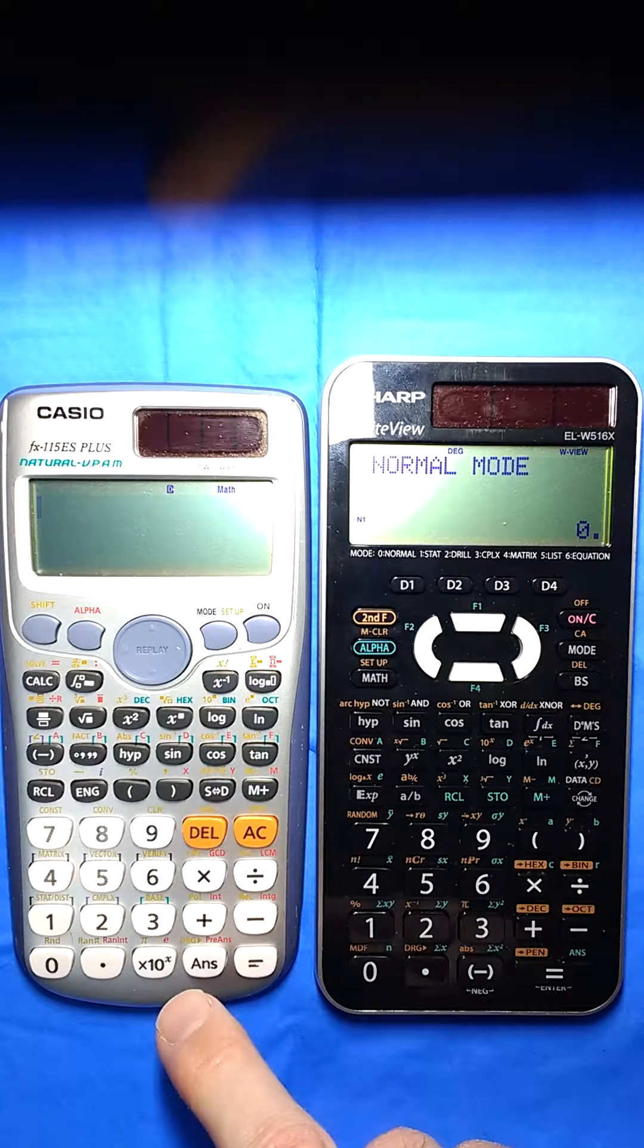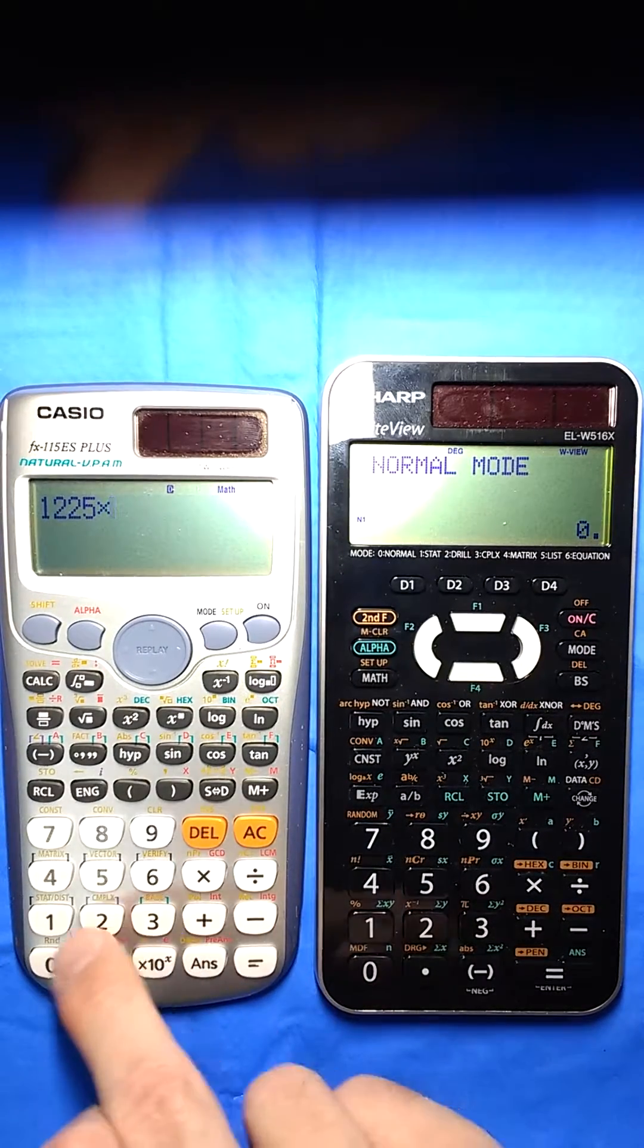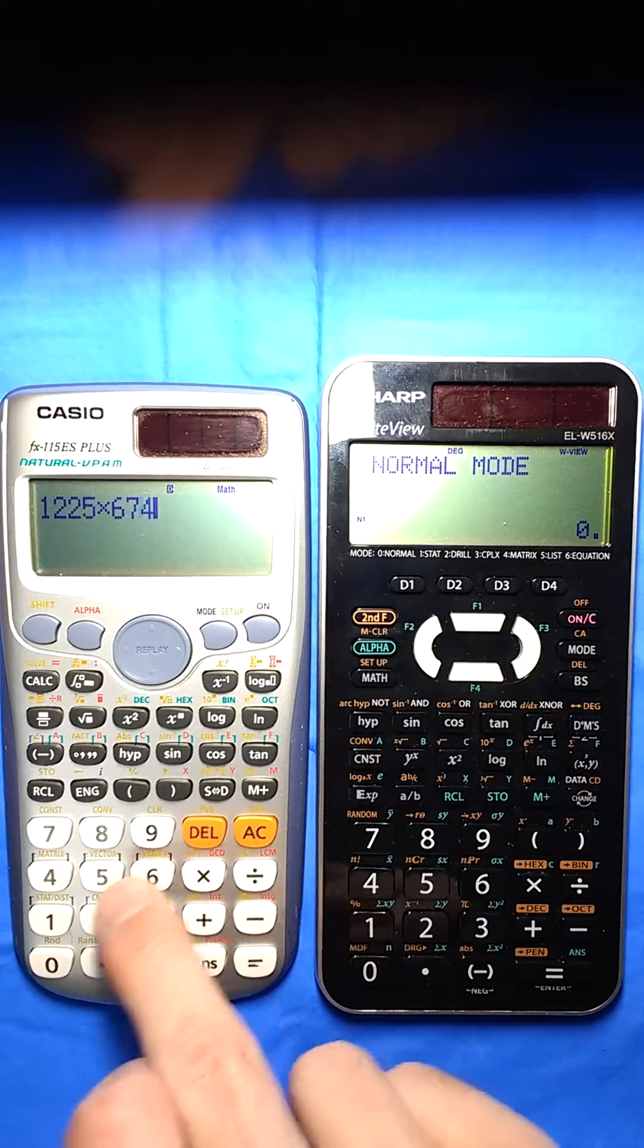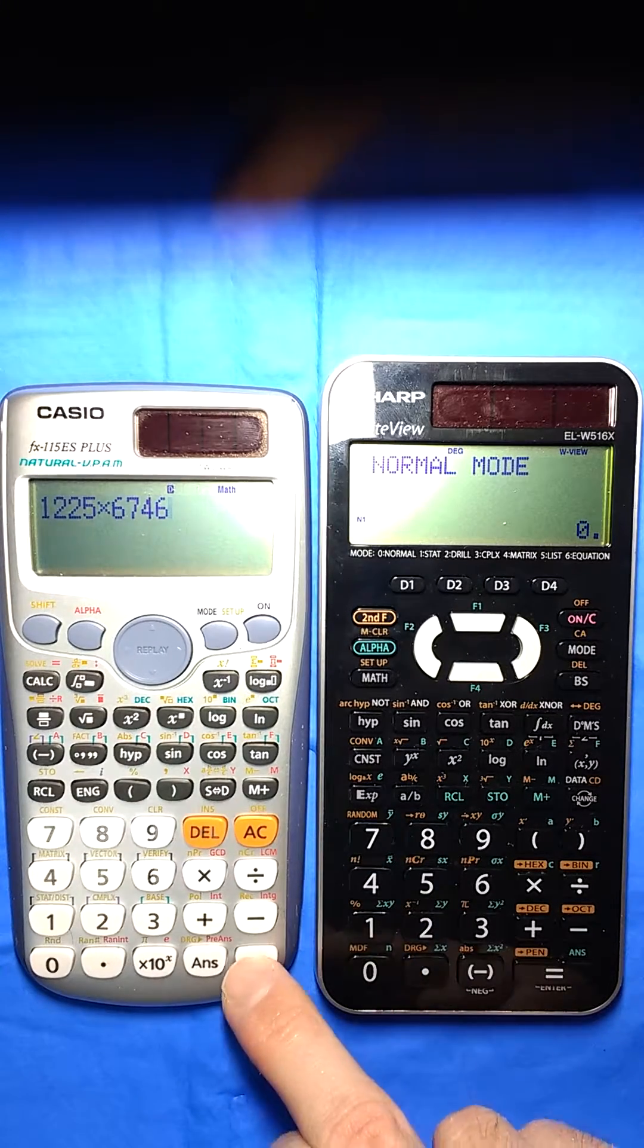On the Casio, let's do 1225 times 6746, hit equals and get an answer.